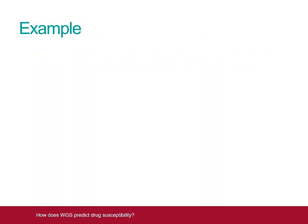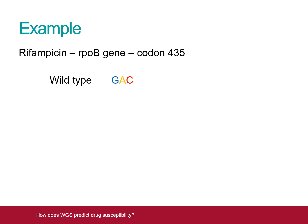In this example, we are looking at rifampicin resistance mediated by the RPOB gene. Codon, or triplet, number 435 in this gene should read GAC, telling the bacteria to place the amino acid aspartate into the protein at that position. In this first mutation, GAC instead reads GAT. Luckily for the patient, GAT also tells the bacteria to use aspartate, so this mutation doesn't cause rifampicin resistance. These mutations are called synonymous mutations.